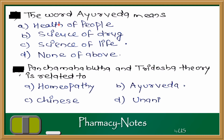The first question is: the word Ayurveda means what? The options are health of people, science of drugs, science of life, and none of the above. If you remember the definition of Ayurveda, it is the ancient science of life. In that time, the science of knowledge was known as Ayurveda. The answer is science of life.